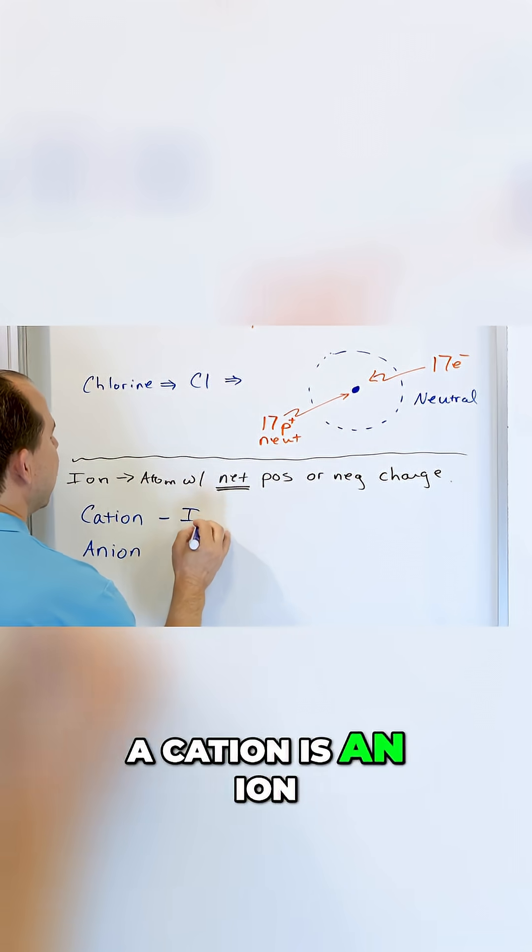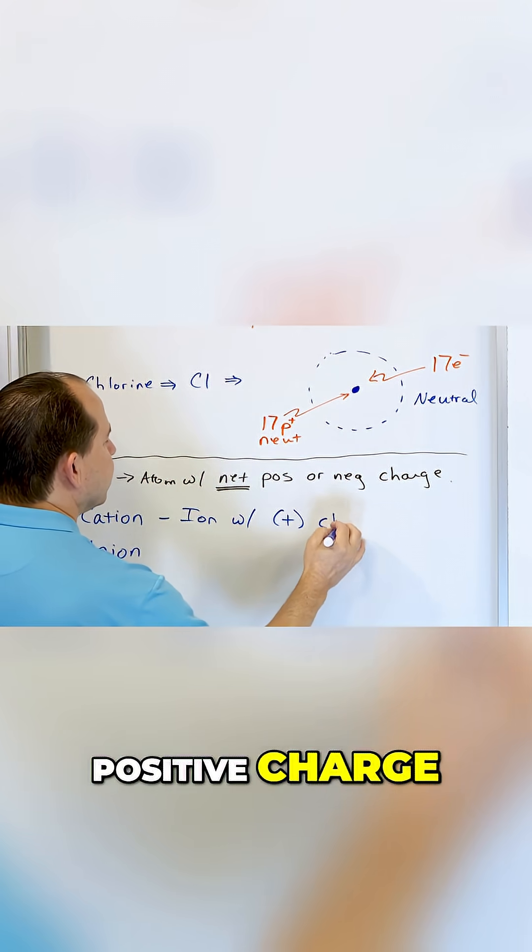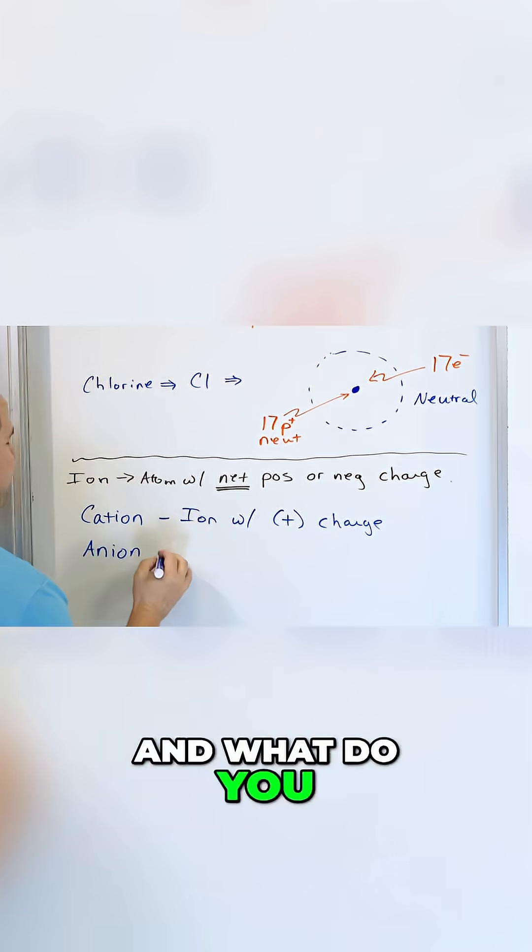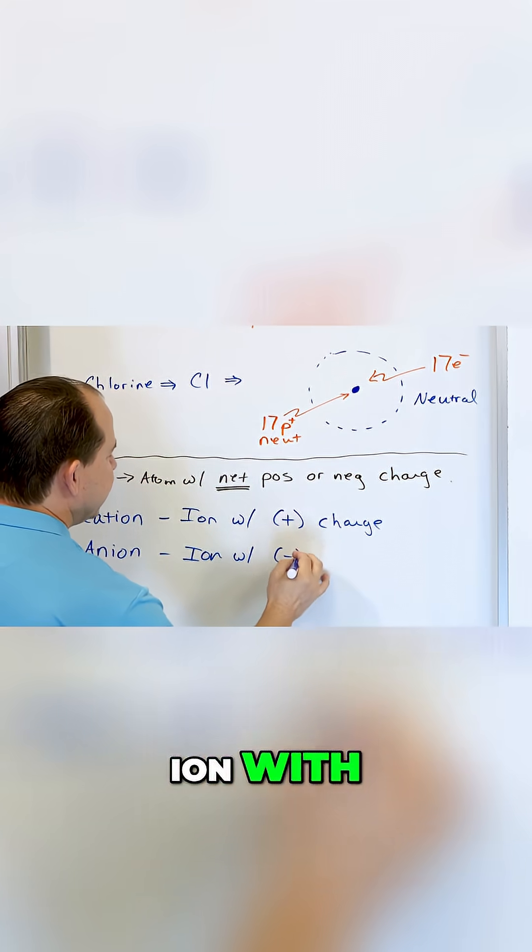A cation is an ion with positive charge. And what do you guess this is? An anion is an ion with a negative charge.